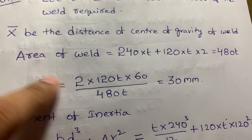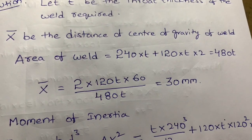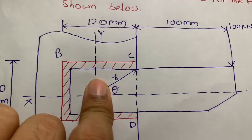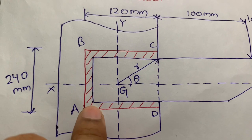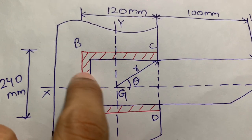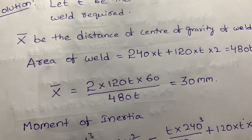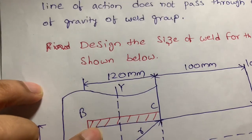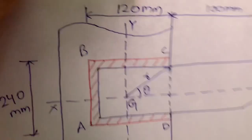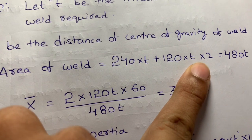To calculate X-bar, the formula is A1Y1 divided by capital A. Capital A is the area of the weld. Taking two portions: the first rectangle has area 240T, and the second rectangle on both sides has area 120T × 2. So total area A = 240T + 120T × 2 = 480T.